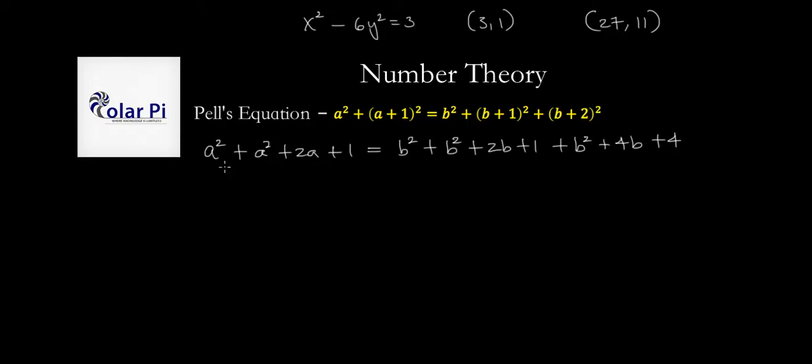Now combining like terms, we see that we can write this as 2a² + 2a. What I'm going to do with that 1 here is cancel it with the 1 right there. So then we have on the right side 1b², 2b², 3b², so I've got 3b², and then I've got 2b and 4b, so that makes plus 6b, and then we've got that 4 at the end, so plus 4.